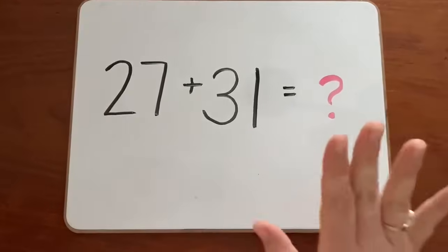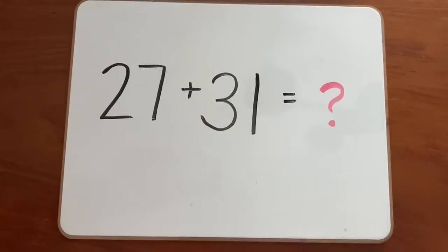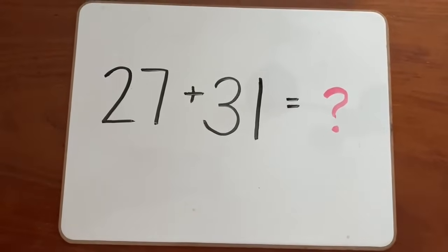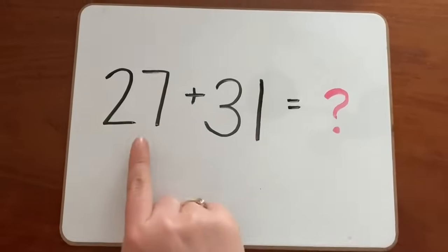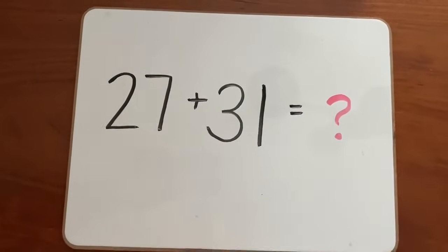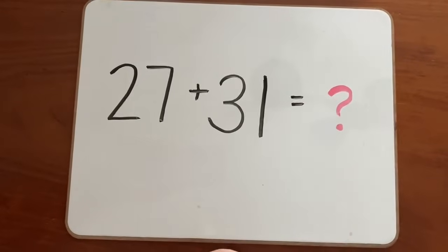Today, our longs and cubes are going to be a tool that we use to help us add two-digit numbers together. Our first step to solve this problem is to figure out how many longs and cubes we need for each number. Let's start with the first one, 27.